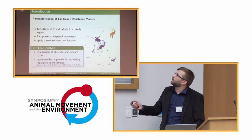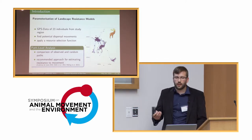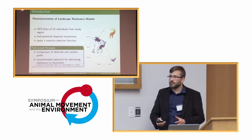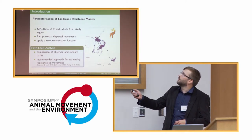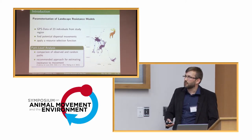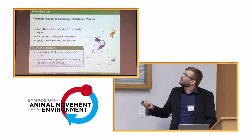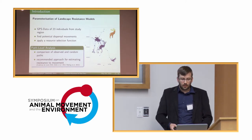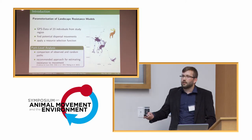With this data we can develop landscape resistance models, but rather than using all the data naively, I wanted to segment each individual's entire path into smaller pieces — filtering out small movements within core habitat areas and identifying the segments in between that might be potential dispersal movements. Once those segments are found, I link them to habitat variables and apply a path-level resource selection function, comparing entire paths with randomly distributed paths. This approach has been recommended recently by other researchers for estimating resistance to movement.